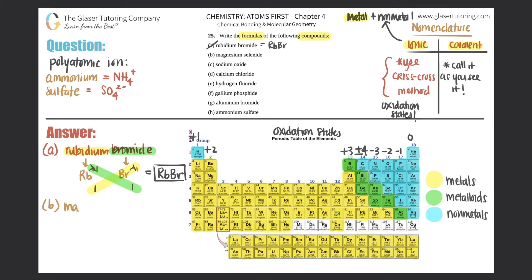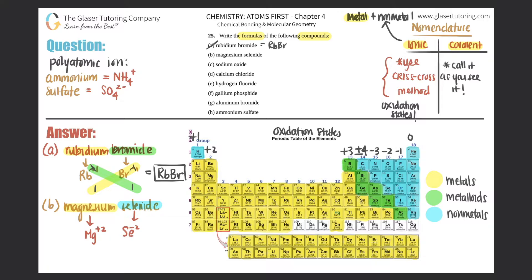Part (b): magnesium selenide. Ionic or covalent? Magnesium is a metal, so that's automatically ionic — use the crisscross method. Magnesium is in group two, so it has a +2 charge. Selenide comes from selenium, which is over here on the periodic table — that's a -2. So Se has a -2 charge.